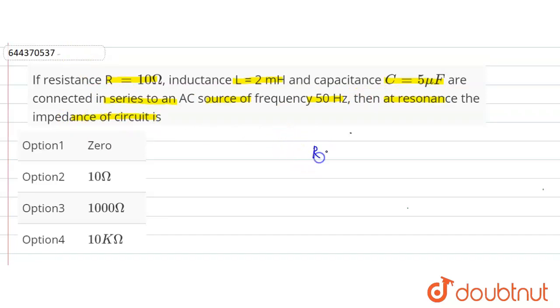So here R is given as 10 ohm, inductance L equals 2 mH, capacitance C is 5 microfarad, and frequency F is given as 50 Hz.